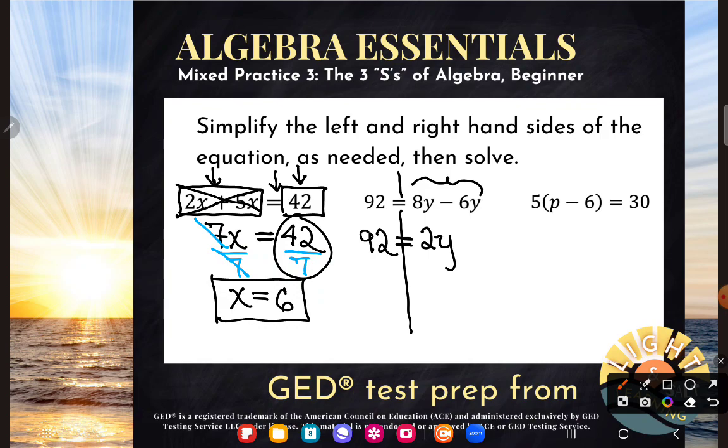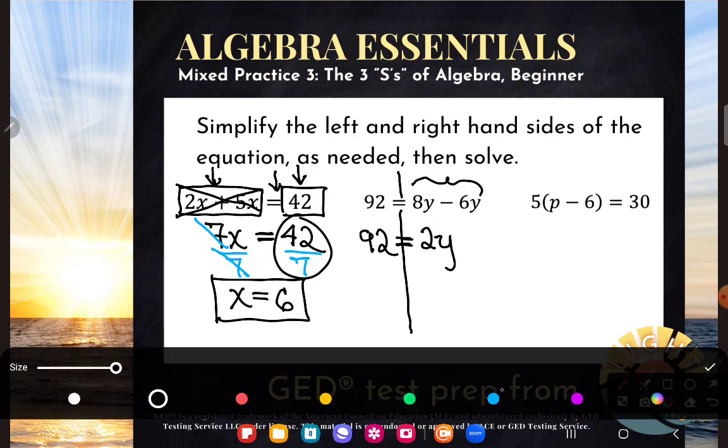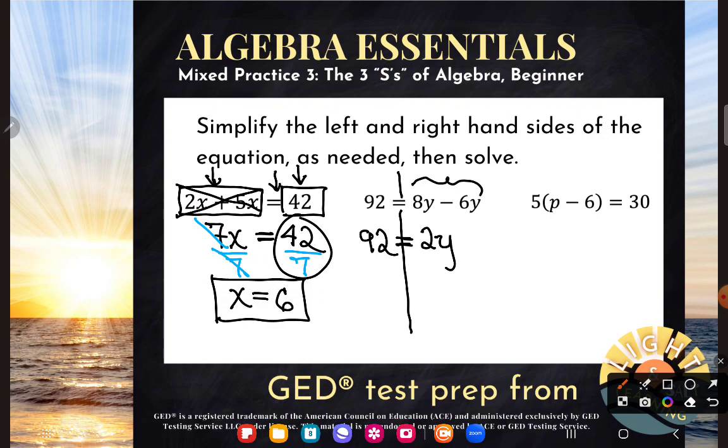And now that I made the left and right-hand simple, like they're not going to get any simpler, right? Nothing I can do with 92. I can't multiply together 2 and y since y is a mystery number. But now that I've made them as simple as I can get them, now it's going to be pretty straightforward to solve. All I need to do is get y alone. So what number's hanging out with y? It's this 2. Let's get rid of him.